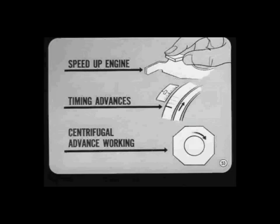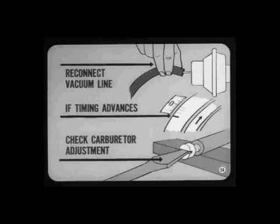After setting basic timing, I speed up the engine and watch to make sure the timing advances as speed increases. This doesn't take the place of bench testing the distributor, but it does assure me that the centrifugal advance is working. Next, let the engine idle. Reconnect the vacuum line and watch the timing marks. There should be no timing change. If the timing advances, I recheck carburetor mixture and idle adjustment to find out why vacuum advance is coming in at idle. On today's engines, it's very important to set timing exactly to specifications.